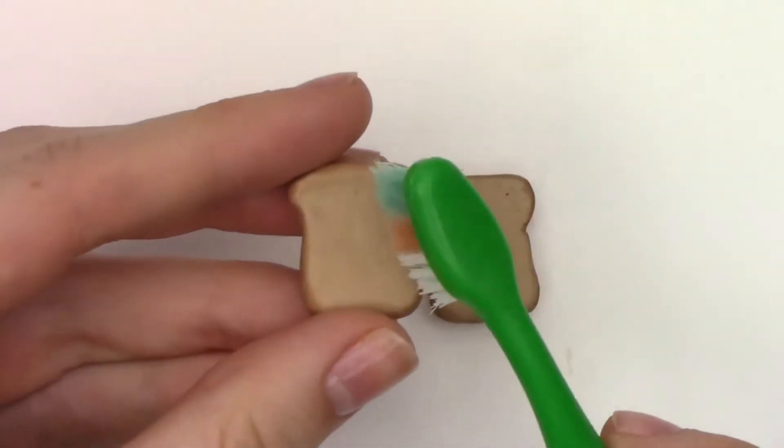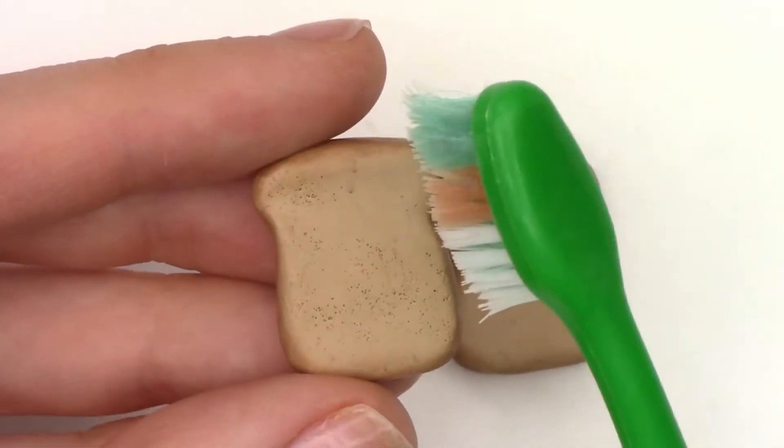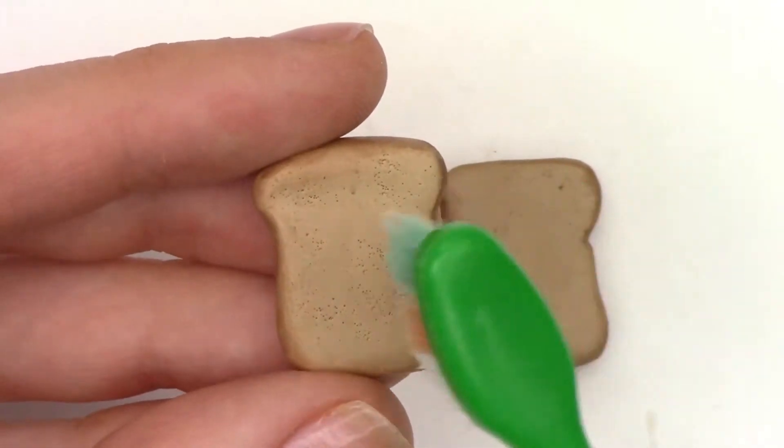Now I'm taking a toothbrush and pressing gently onto my clay. This will just give our bread some texture.